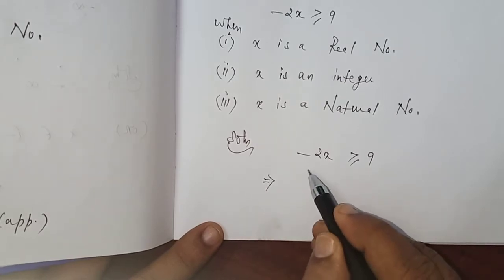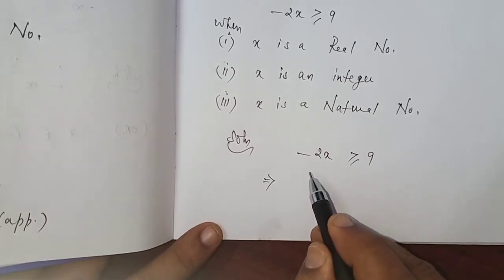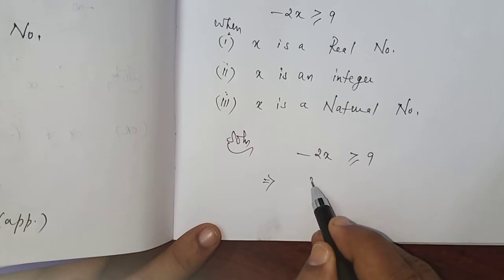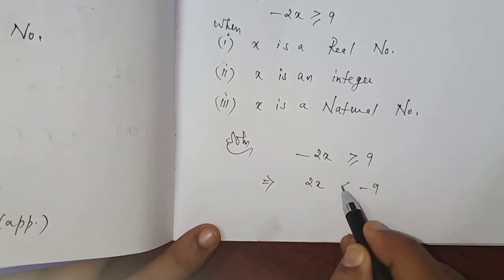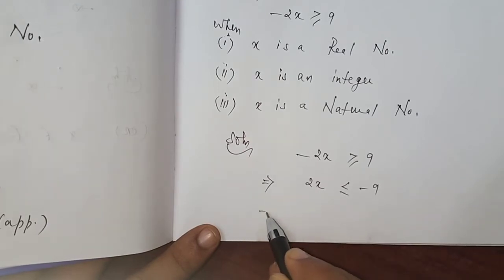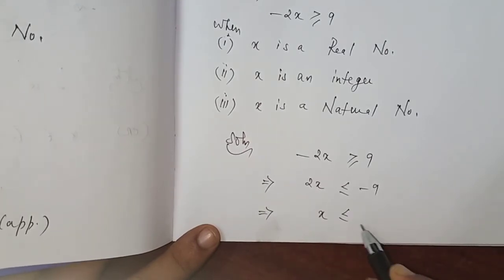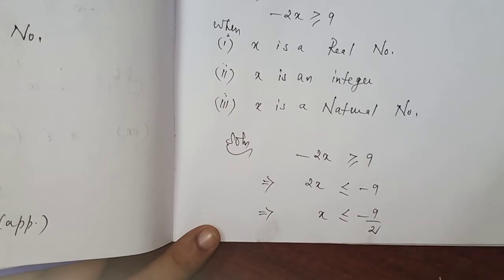First, we can change minus into plus. You multiply minus on both sides, it becomes +2x, it becomes -9, automatically the greater than or equal to becomes less than or equal to, which implies x less than or equal to -9/2.